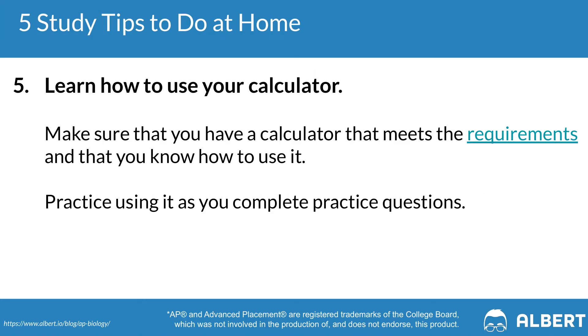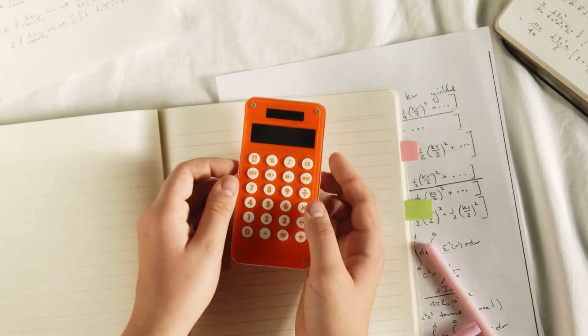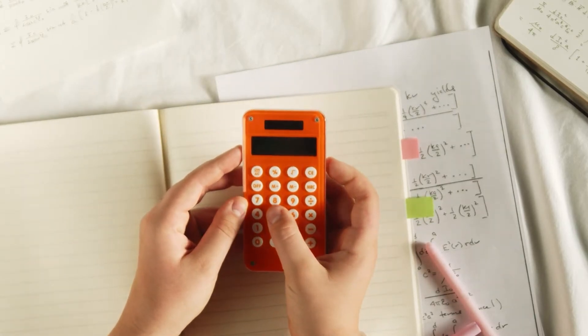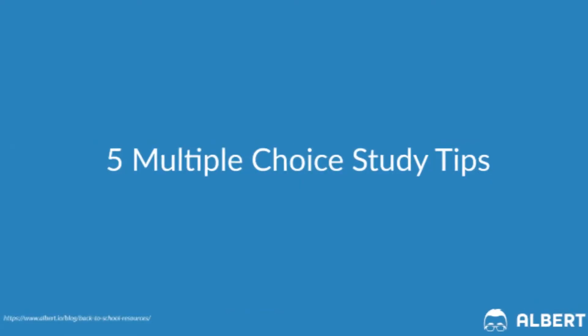Our fifth general tip is to make sure that you feel comfortable with how to use your calculator on the AP Biology exam. You'll be able to use a four-function, scientific, or graphing calculator, so it's really important that you are familiar and comfortable with the calculator that you choose on test day. Now let's jump into what tips we can keep in mind when approaching the multiple choice section.